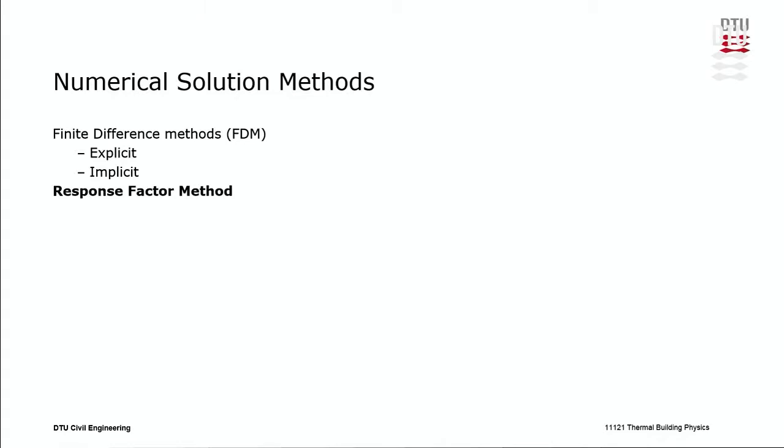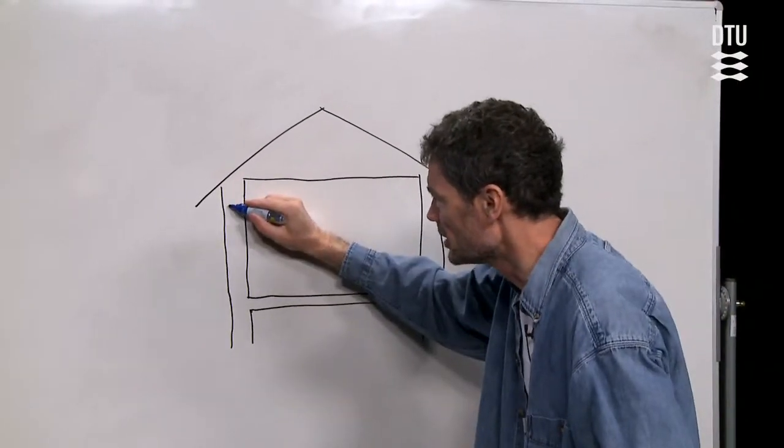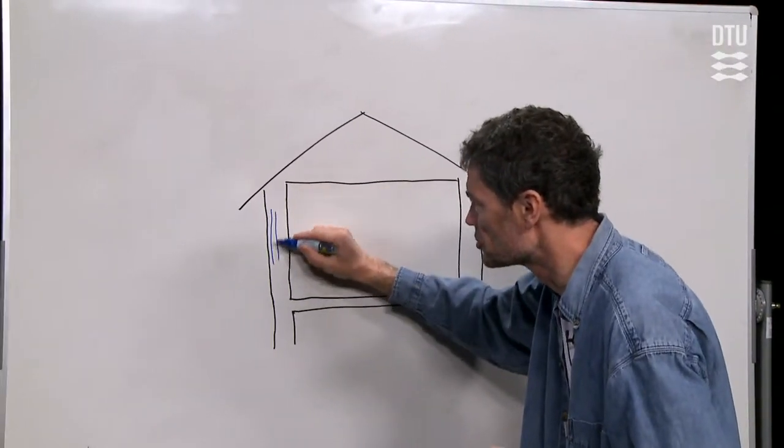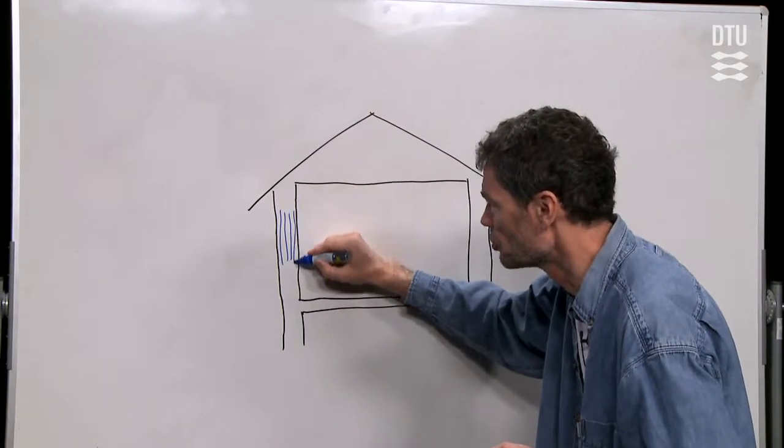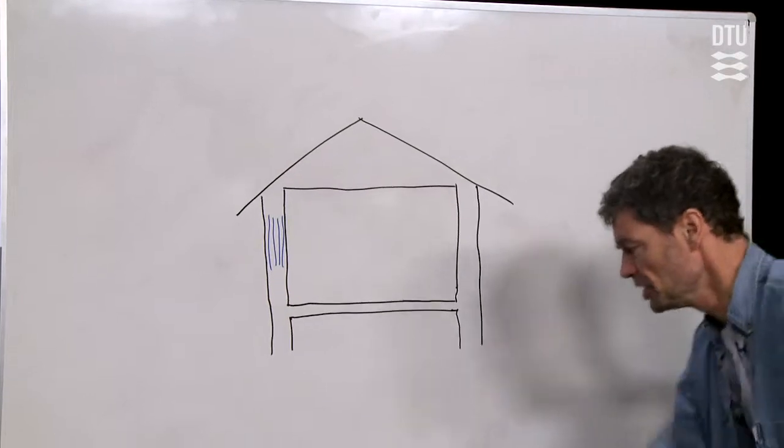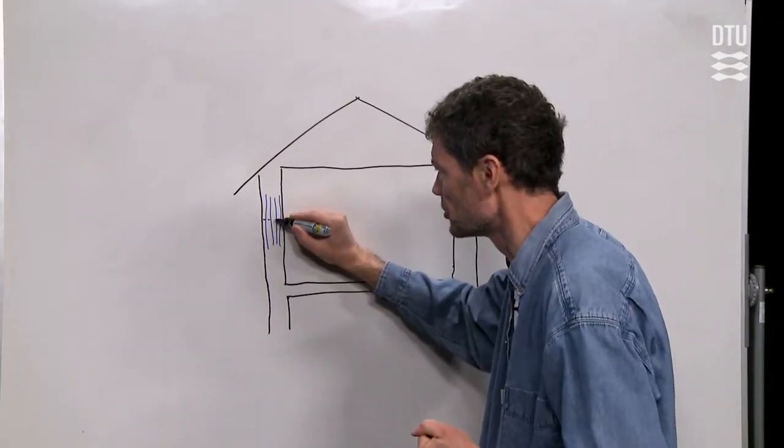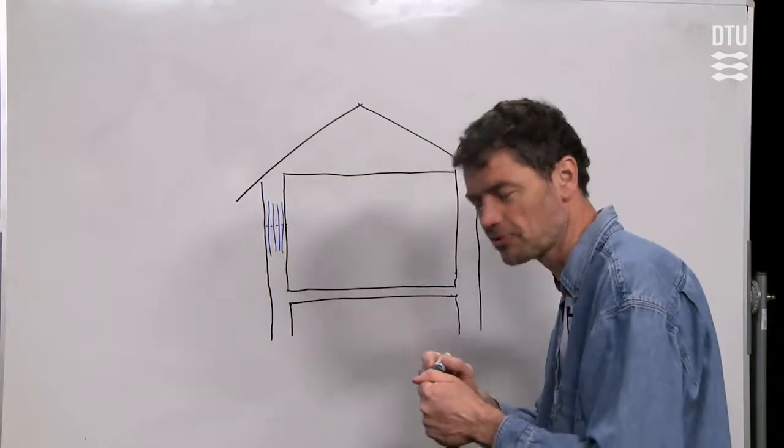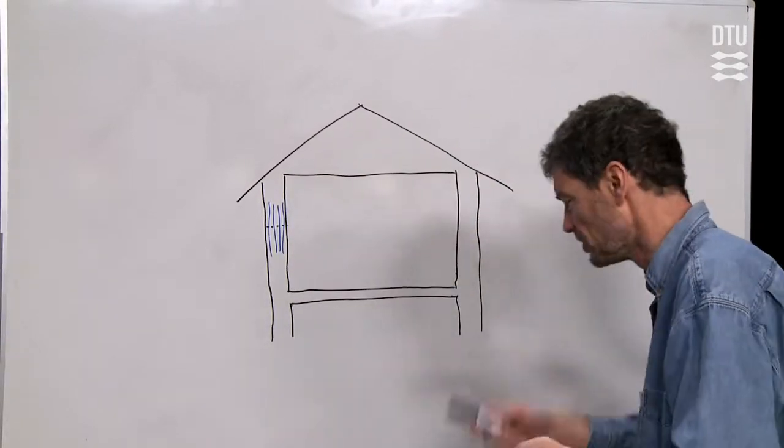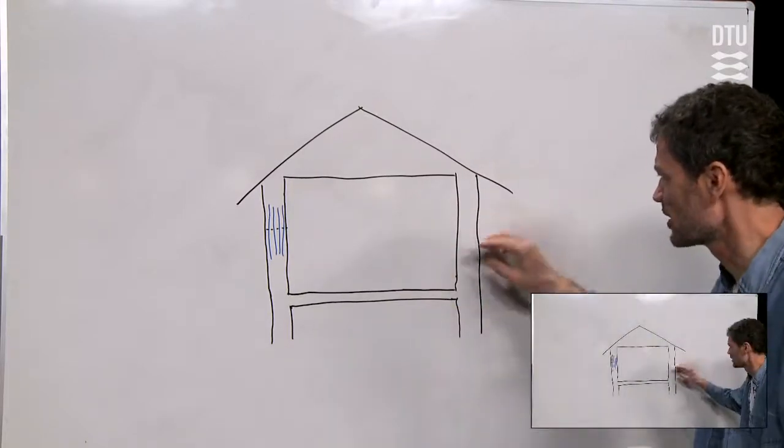So just briefly to illustrate or to recap what the lecture with the finite difference method did. It divided the walls into some finer volumes, for which we made, in each volume, we had a node point where we calculated the temperature. But this I will not recap. You have to see that lecture separately. But that is mainly to illustrate the alternative today, where we talk about response factors.